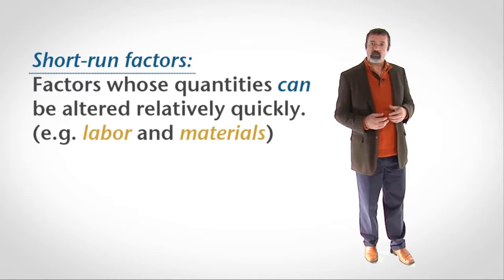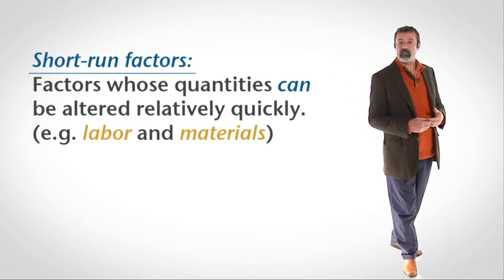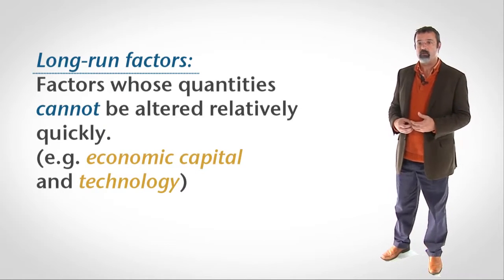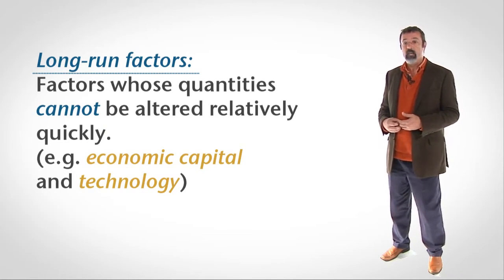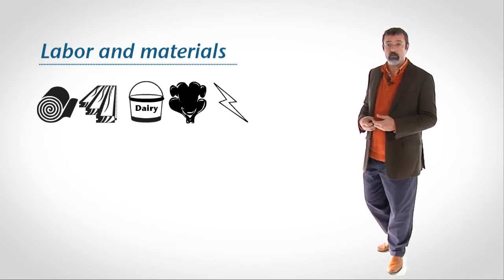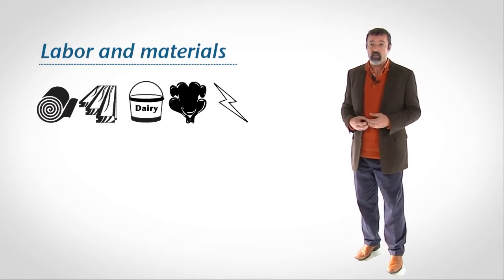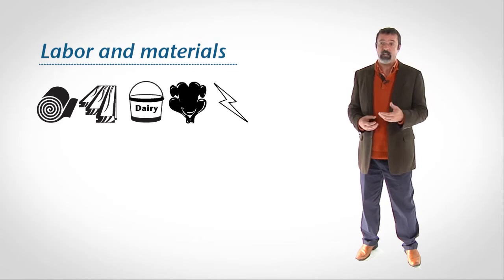Short-run factors are those factors whose quantities can be altered relatively quickly. Long-run factors are factors whose quantities cannot be altered quickly. Typical examples of short-run factors are labor and materials — for example, plastic, wood, dairy and meat products, and electricity. Materials means any non-labor input that is transformed into the product.